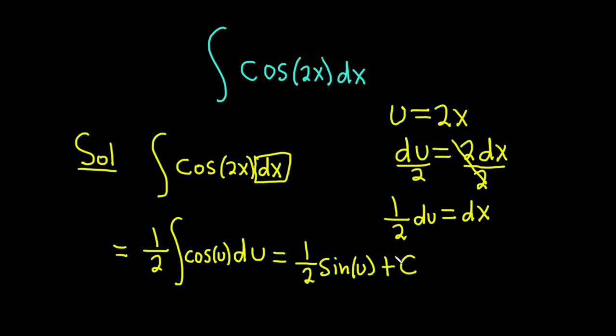But we're not done. We have to go back to the original variable which was 2x. This is equal to 1 half sine of 2x plus our constant of integration which is capital C.